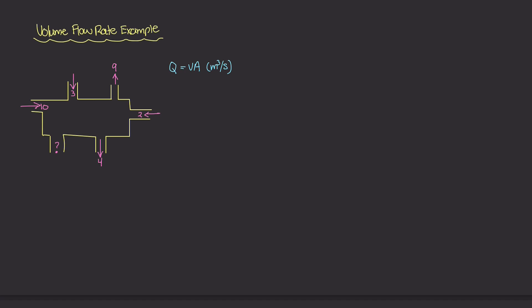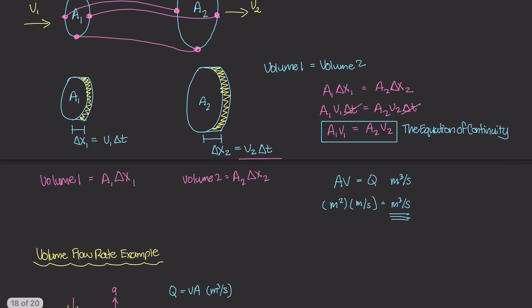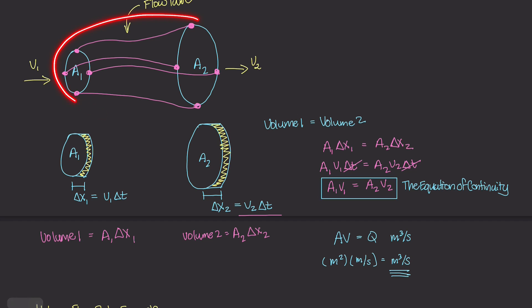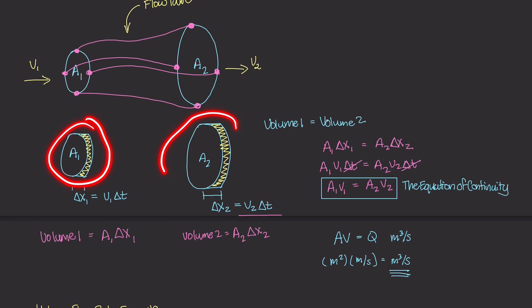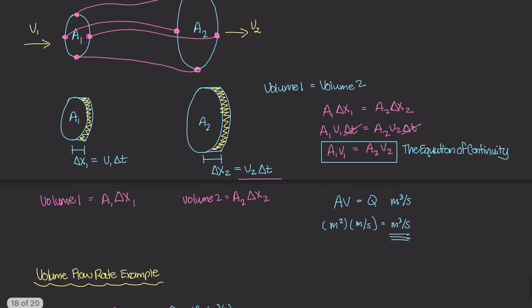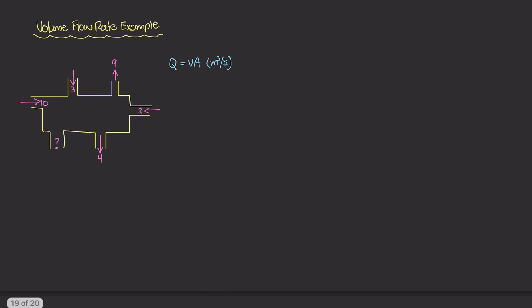If you remember back to the last couple of lectures, we looked at a flow tube — basically how much liquid is going through one point and how we can figure out how much liquid is exiting that same tube. What we found was that the volume of liquid entering and exiting a flow tube over a particular time had to be the same, and that's where the equation of continuity came from. So if we apply the same principles here, we know that the volume entering the system has to equal the volume exiting the system.